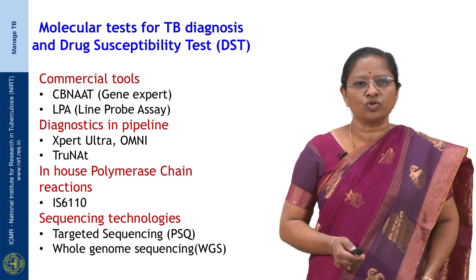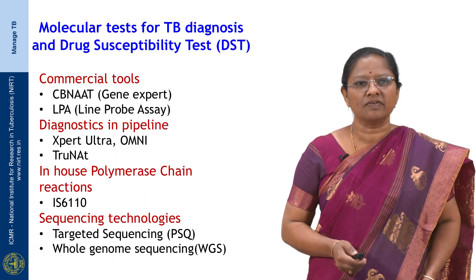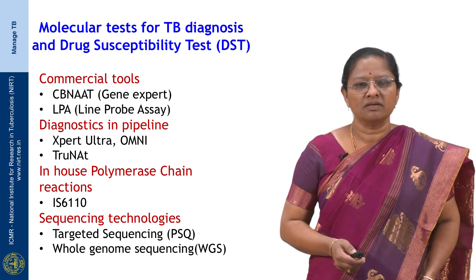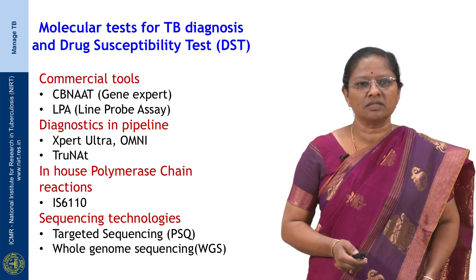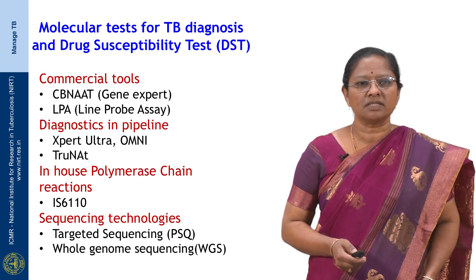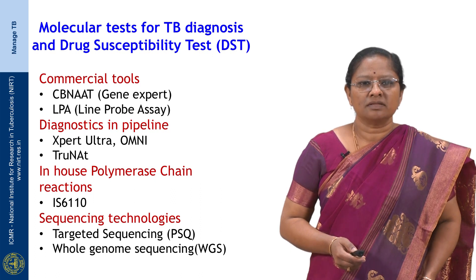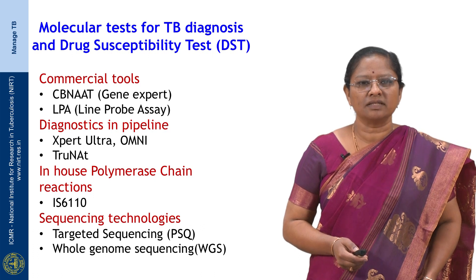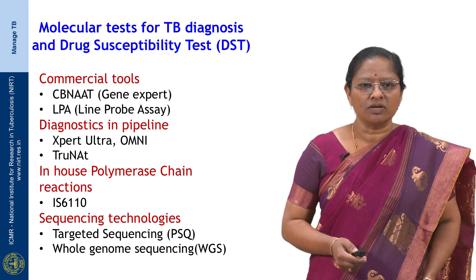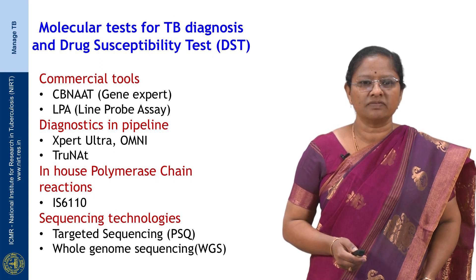The next slide shows the different molecular tests currently available for diagnosis of tuberculosis and drug susceptibility testing. One is the commercial tools currently in place, which includes CB-NAT — one method is GeneXpert and the other is Line Probe Assay. I will also discuss diagnostics in the pipeline, which includes the Xpert Ultra, the Omni, and the TrueNat devices. There are also in-house polymerase chain reactions and sequencing technologies like targeted sequencing and whole genome sequencing, currently not utilized for patient management in India, but useful for discordant results or when further confirmation is required.